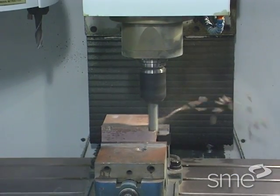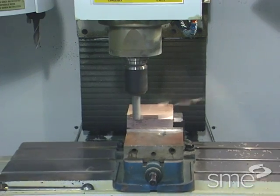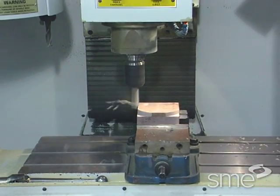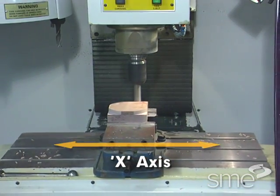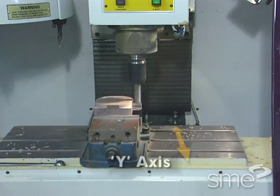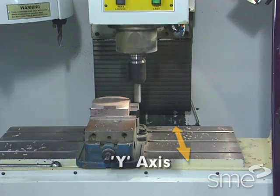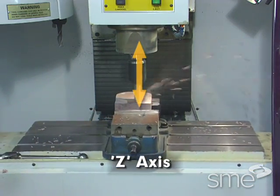The vertical milling machining center typically has three linear axes of motion, with each assigned an alphabetic designator or address. The table's motion side to side is called the X axis. The table's motion in and out is called the Y axis. And the head movement up and down the column is called the Z axis.